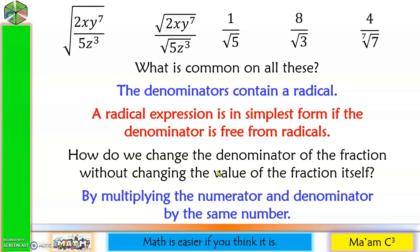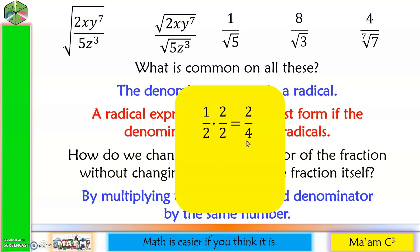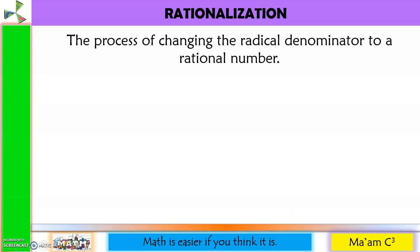Here's an example. Let's say we have 1/2. If we multiply the numerator and the denominator by 2, the answer will be 2/4. We were able to change the denominator from 2 to 4 without actually changing the value of the fraction, because 1/2 is equal to 2/4. We can also do this with radicals, and this is what we call rationalization — the process of changing a radical denominator to a rational number.